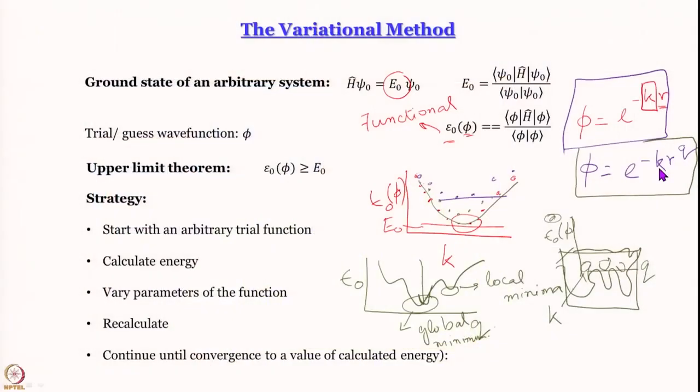We are discussing the variational method and we have presented an introduction to it. We write a functional epsilon_0 which has more or less the same form as the ground state energy. The only difference is that the ground state energy expression involves the actual wave functions we do not know. For epsilon_0 we have a trial guess wave function, and this wave function has associated parameters called variational parameters. We vary these parameters, calculate epsilon_0, and the upper limit theorem tells us that whatever minimum value we get for epsilon_0 is the upper bound of E_0.